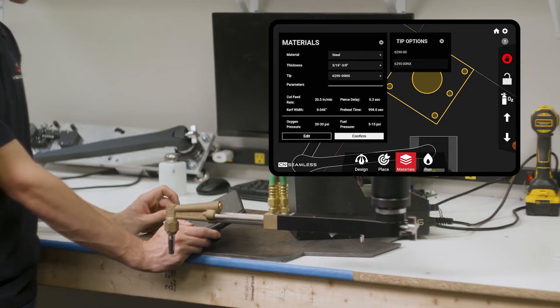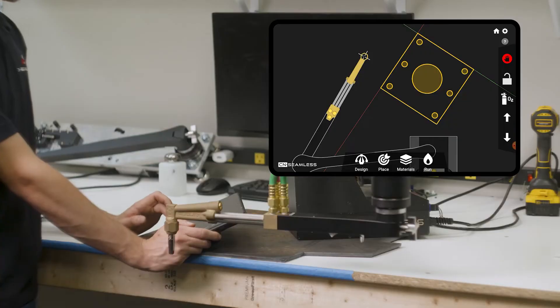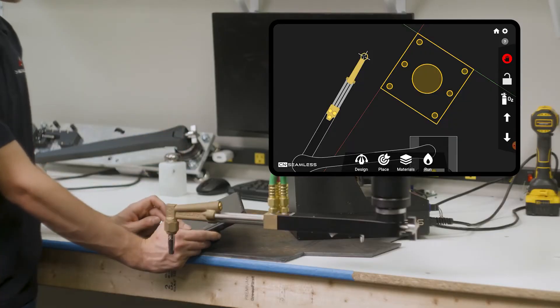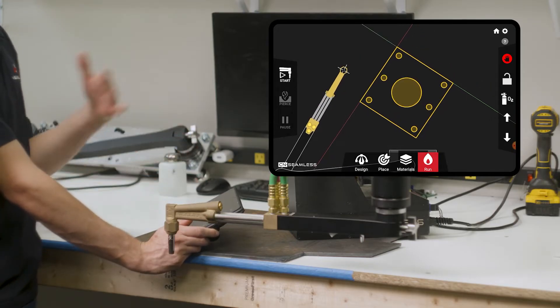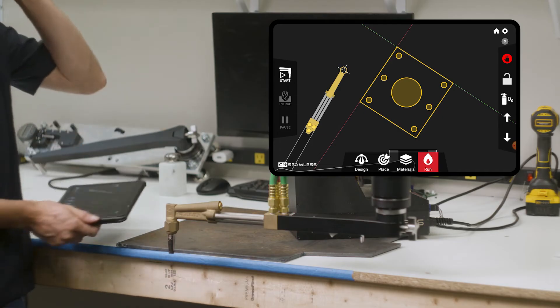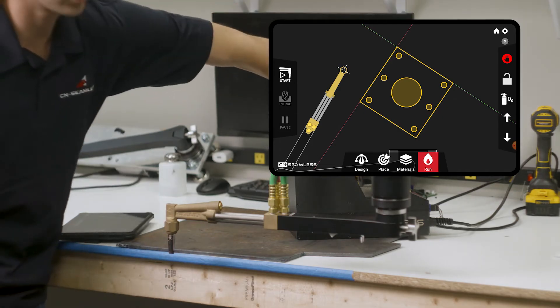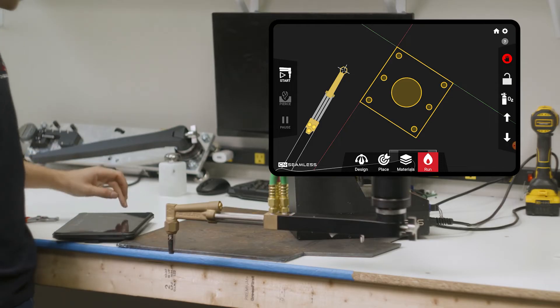So the next thing we're going to do is click confirm. So at this point, we are ready to run this cut. So I'm going to go ahead and click on run. So that is on the right here. And it's going to go ahead and process all the things it needs to do before it can cut. And at this point, you would go ahead and light your torch. So you use your preheat flint, preheat valves in the back, light your torch like a hand torch, and then click start.